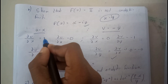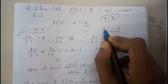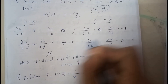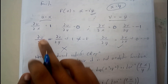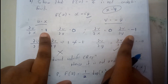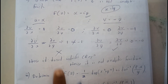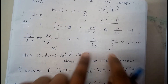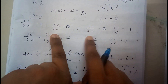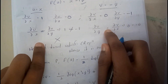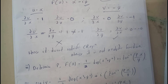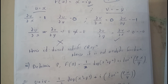Differentiation of u with respect to x gives 1, with respect to y gives 0. V with respect to x gives 0, v with respect to y gives −1. Checking the condition ∂u/∂x = ∂v/∂y: one is 1 and the other is −1, so they are not equal. The second condition ∂u/∂y = 0 and −∂v/∂x = 0 is satisfied, but since one condition is not satisfied, this does not follow Cauchy's Riemann equations, so f(z) = z̄ is not an analytic function.